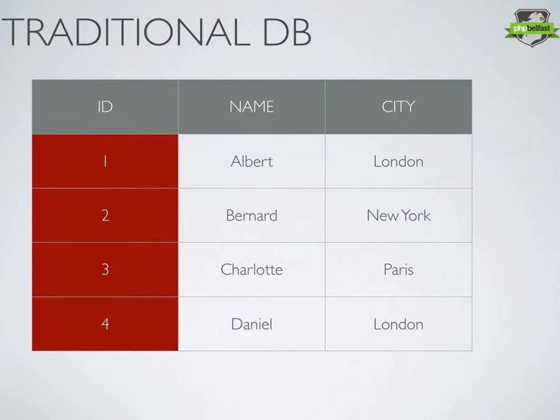The more entities we have and the more properties a single row might have, the more join tables we end up running into. The process of normalisation can actually be to our detriment, and we end up having to create far too many tables and far too many join relationships.